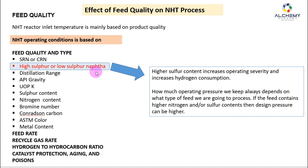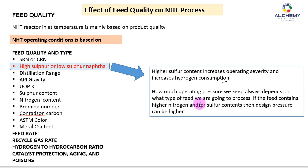Similarly, whether we process high sulfur or low sulfur naphtha also matters. CRN contains more sulfur and nitrogen; SRN contains slightly less. Higher sulfur content increases operating severity and increases hydrogen consumption, because if there is more nitrogen or sulfur in the naphtha before hydrotreating, more hydrogen is consumed. How much pressure we keep always depends on the type of feed; if it contains high sulfur or nitrogen, the design pressure must be higher.